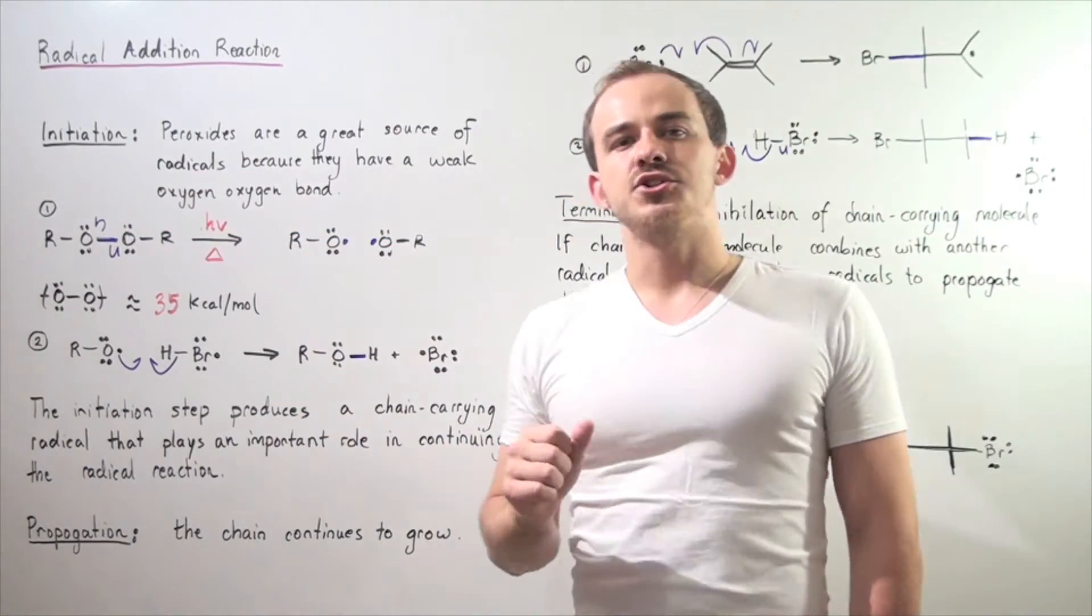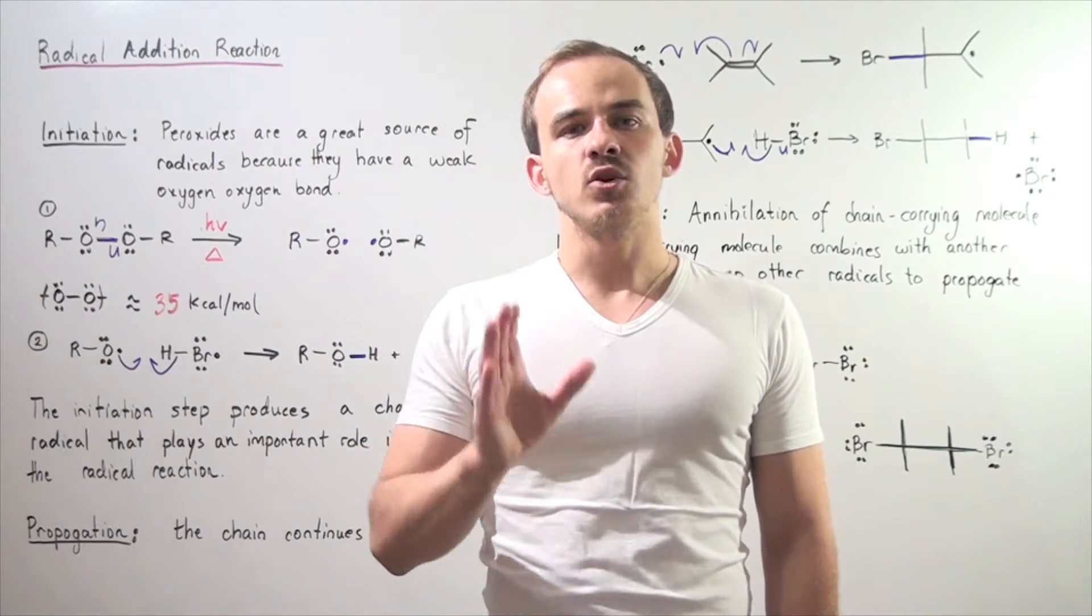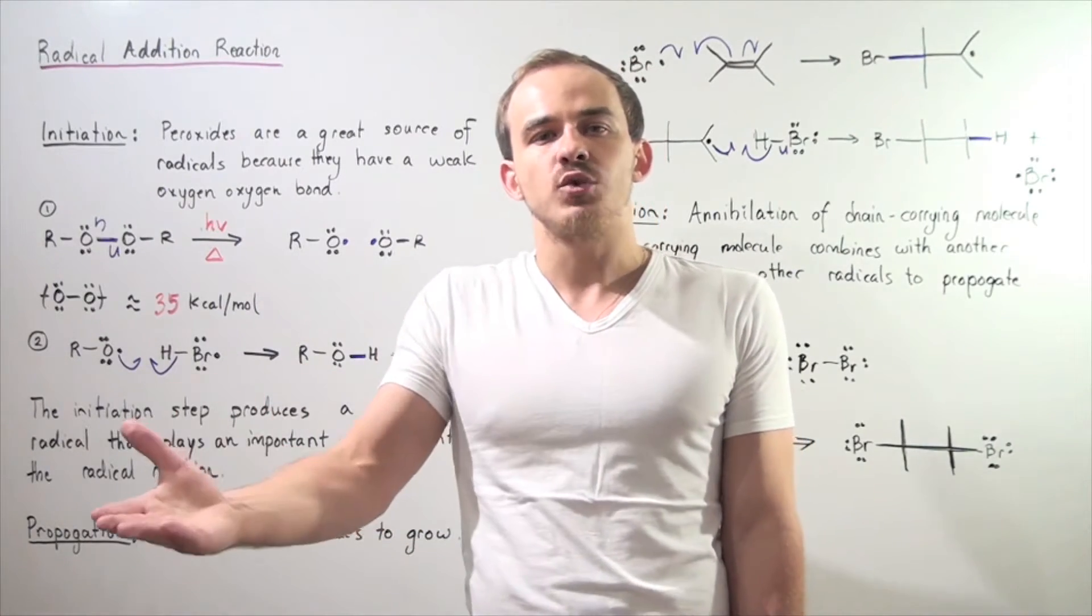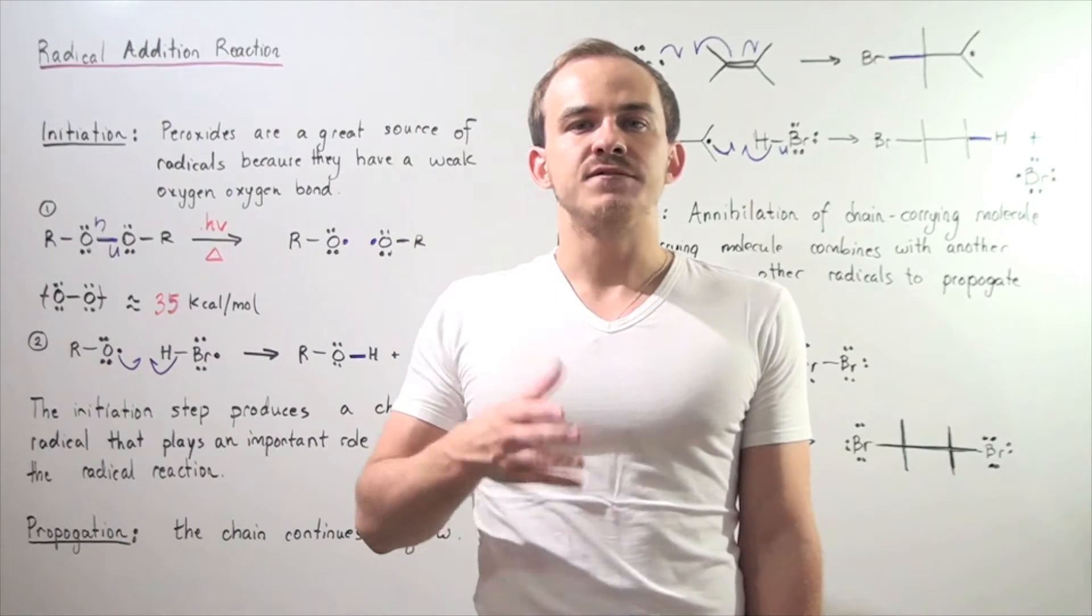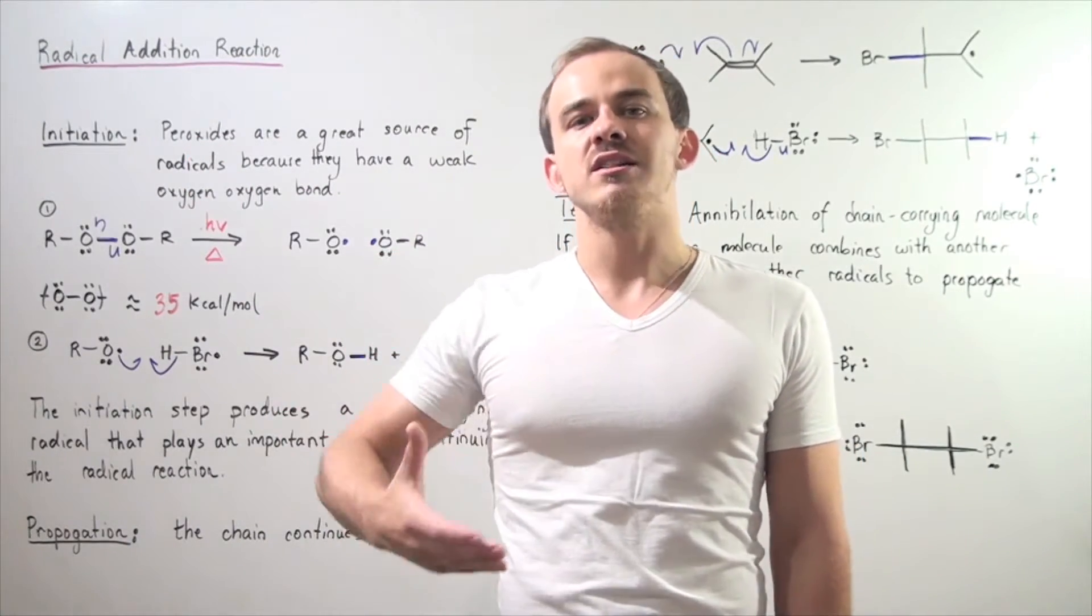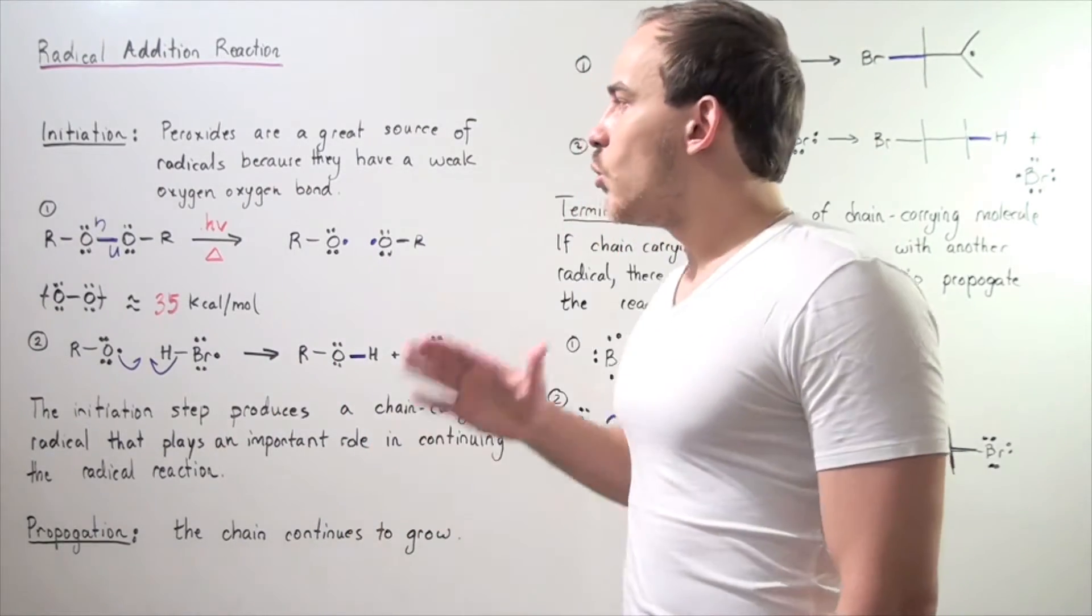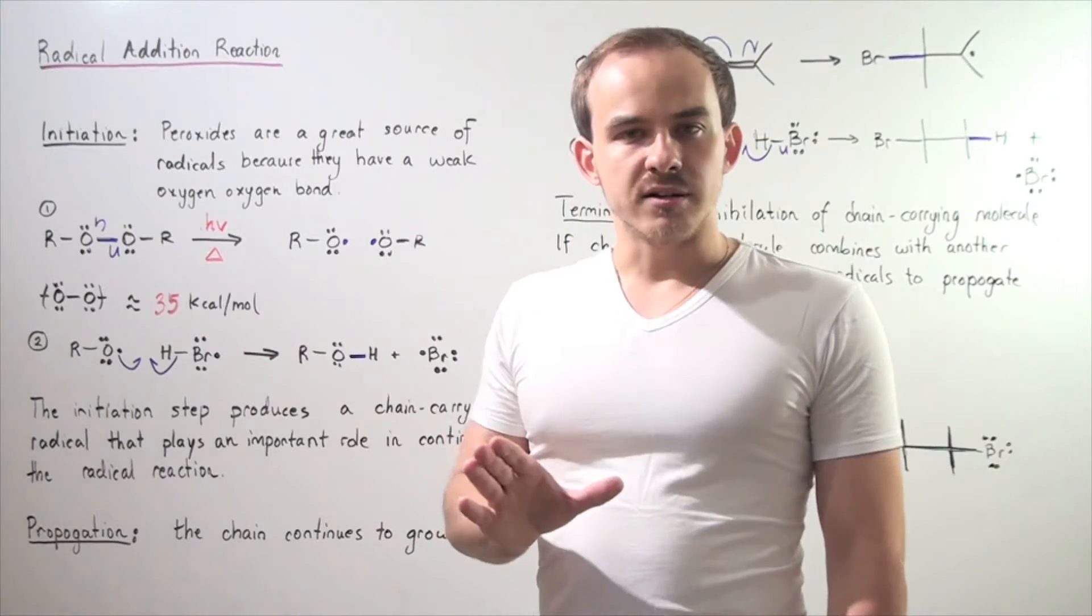In the initiation step, we produce radical reactants. In other words, to have a radical reaction, we need some amount of radicals. The initiation step allows us to produce our radical compounds. What's a good source of radicals?